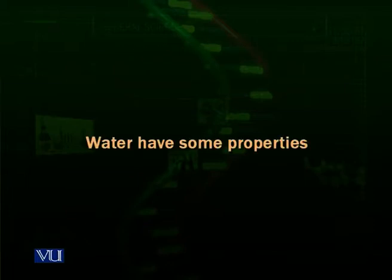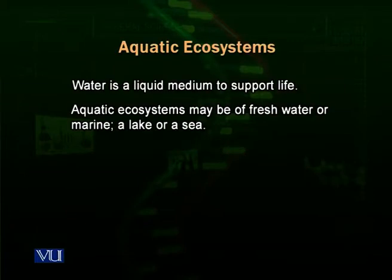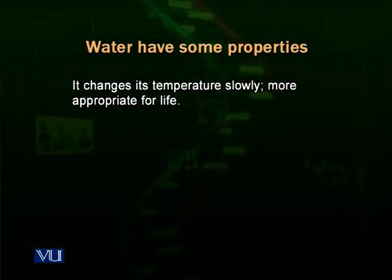Water has certain specific properties. Aquatic ecosystems, whether they consist of a marine ecosystem — that is the sea — or a freshwater ecosystem like a pond, a lake, or a stream. Water is the major component. These are some important characteristics of water which are responsible for supporting a specific form of life inside that ecosystem.